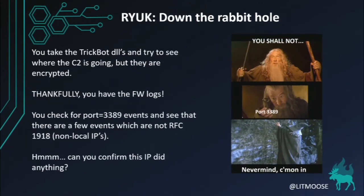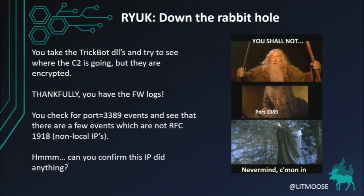Next step. We have these TrickBot DLLs and we want to see where that C2 is going — we think the inject_dll64 probably has the C2 in it — but they're encrypted, so we can't look at those directly. Thankfully, we did ask for those firewall logs. We check for port 3389 — which is RDP — and we want to see if there's remote traffic from non-local, non-RFC 1918 IP addresses going in.